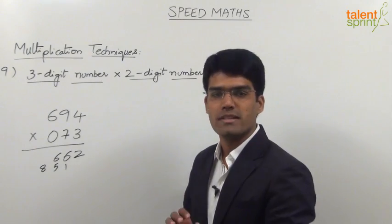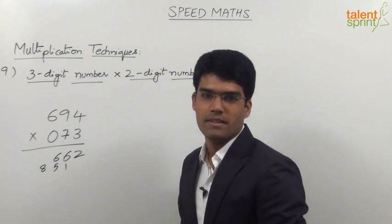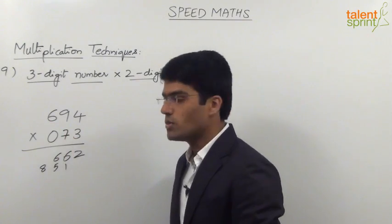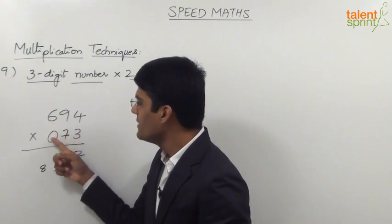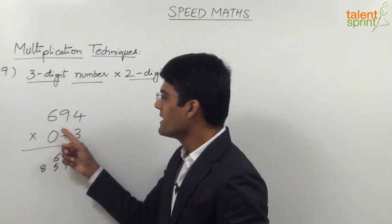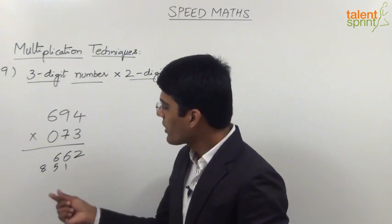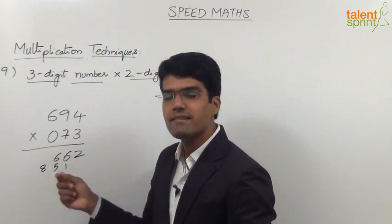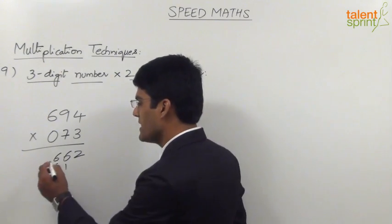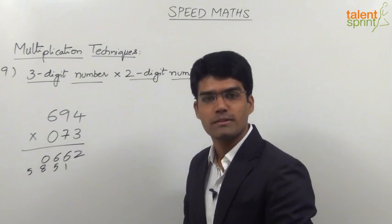Moving on to the fourth step — cross multiplication of tens place with hundreds place: 6 × 7 = 42 and 9 × 0 = 0, so the cross multiplication results in 42. With the carry of 8, 42 + 8 = 50. So we take 0 in the answer and 5 is carried forward.